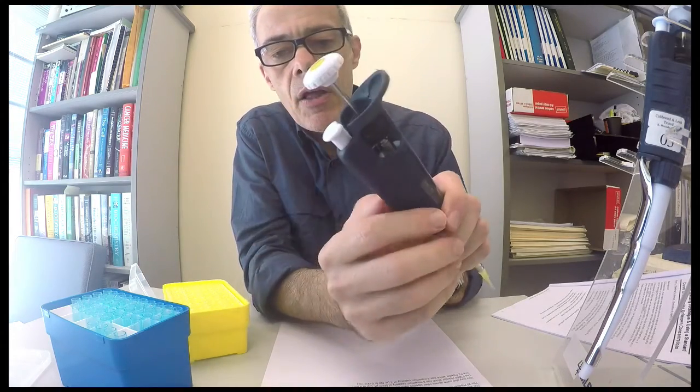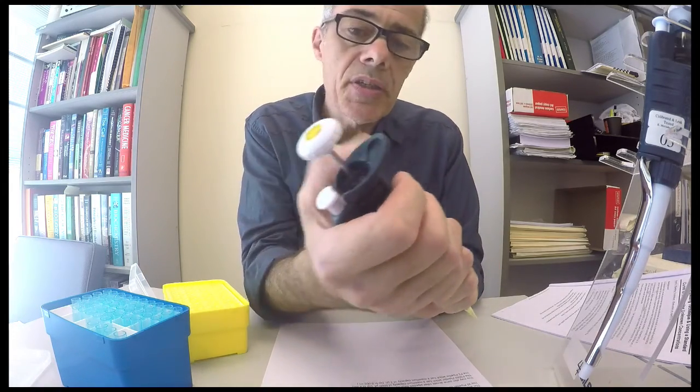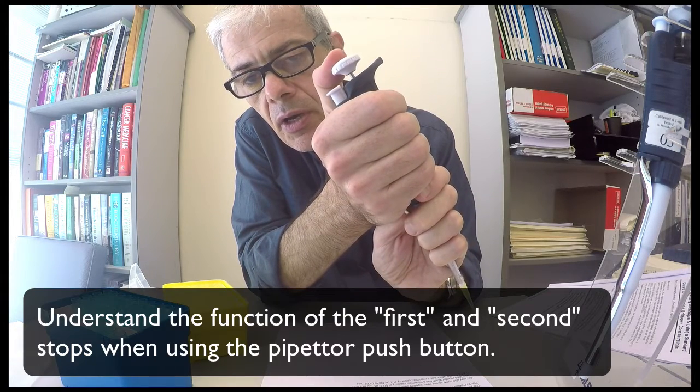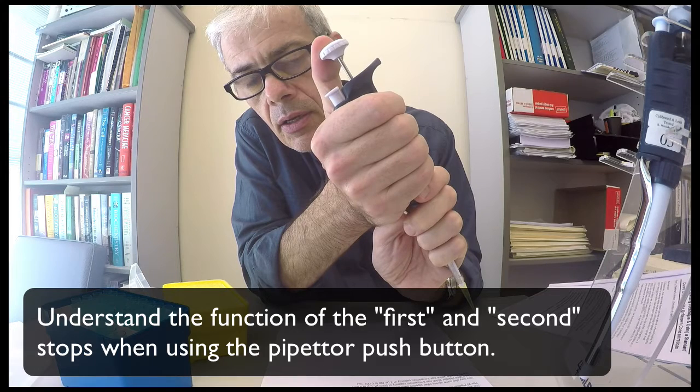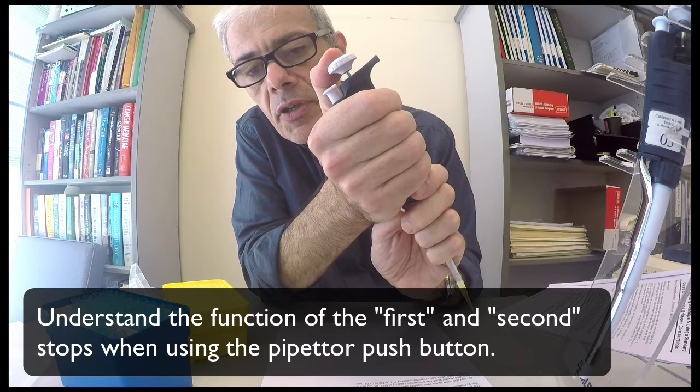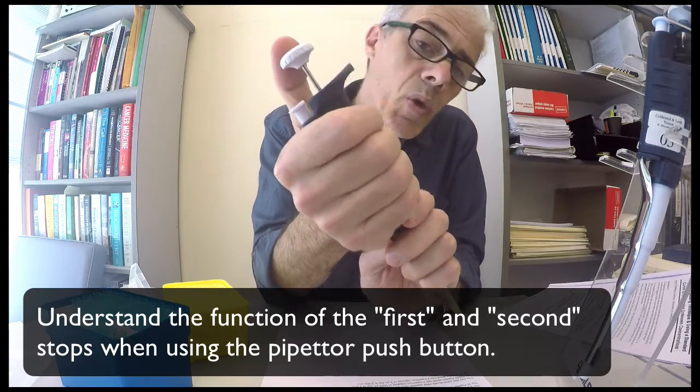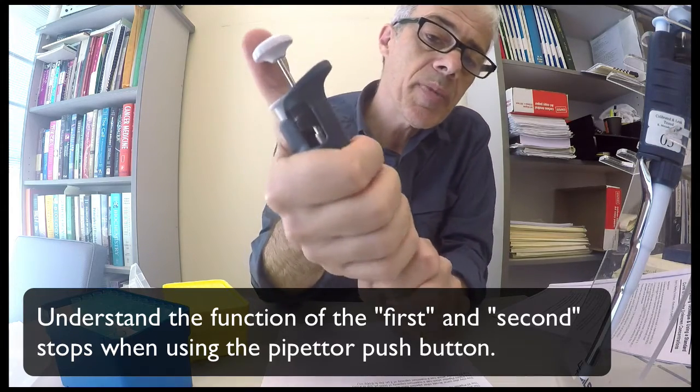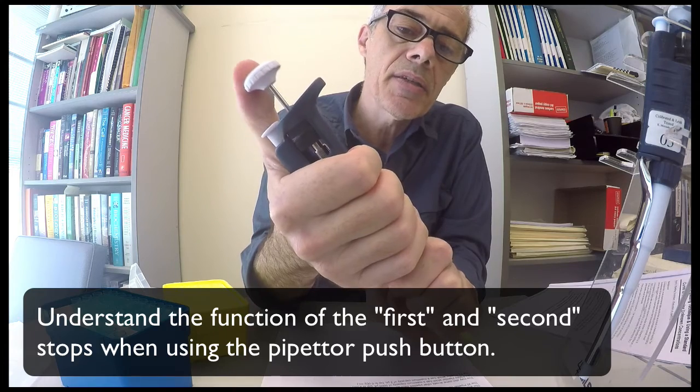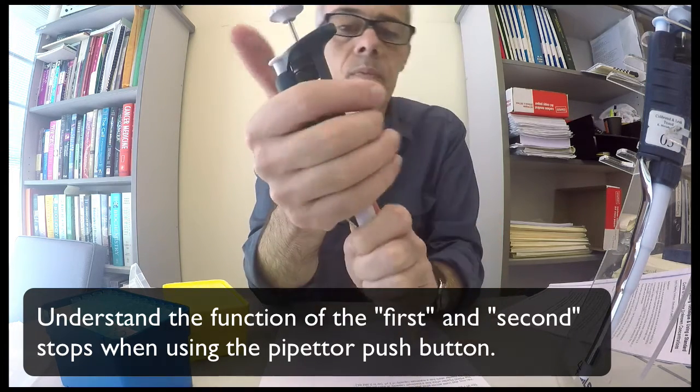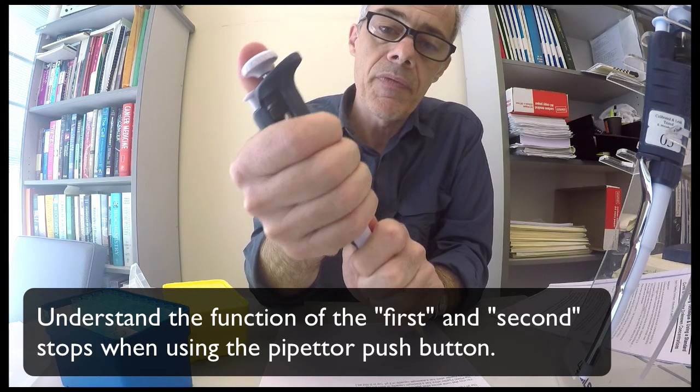Now there are two positions that this plunger will work at. There's the first one and then there's the second one. The first one is calibrated, so when I dispense it to the first position it's going to dispense the volume that's written on this scale here. So that's the first position.